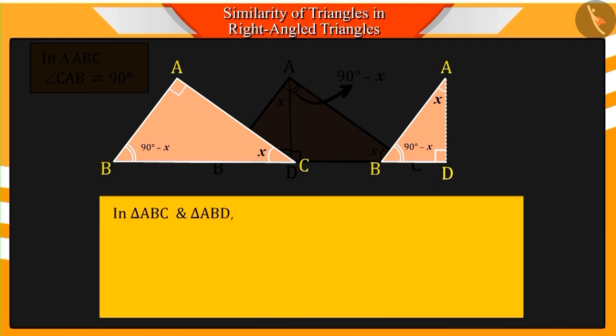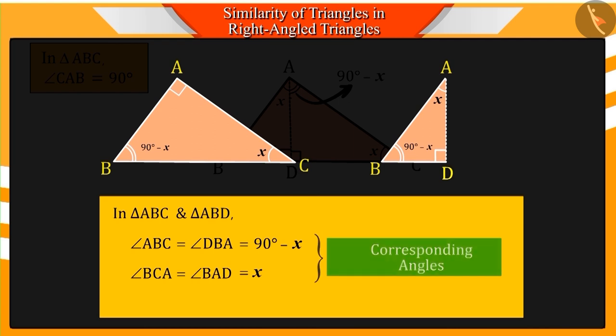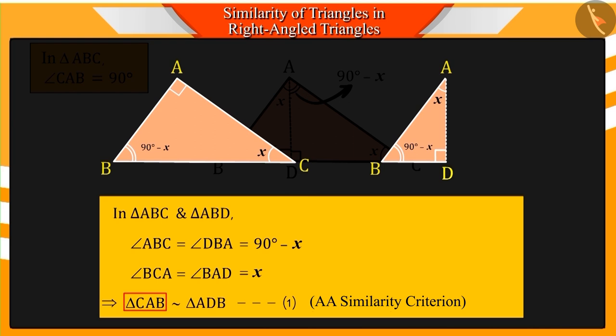You will see that angles ABC and DBA, and angles BCA and BAD are equal. Hence, based on AA criteria, triangle CAB and triangle ADB will be similar triangles.